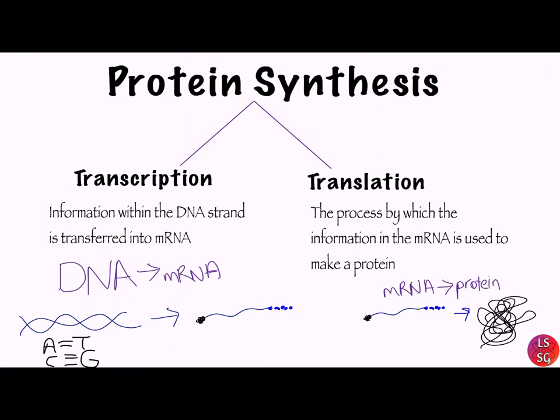A gene is a stretch of DNA that codes for a specific polypeptide or specific protein. We learned in the previous video how to go from a specific gene to messenger RNA. In this video we will look at how to go from messenger RNA to protein by a process called translation.